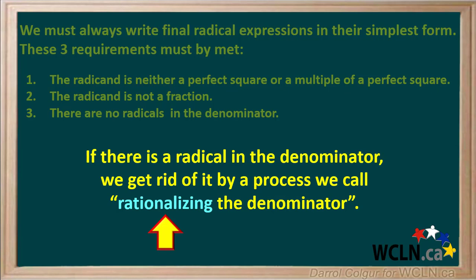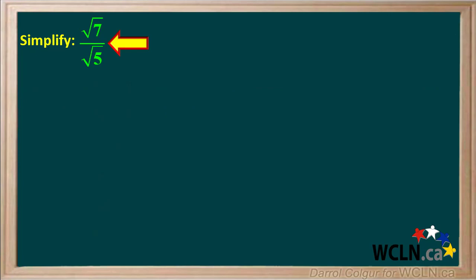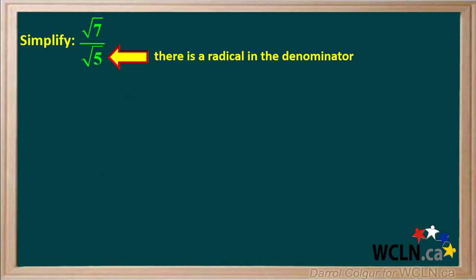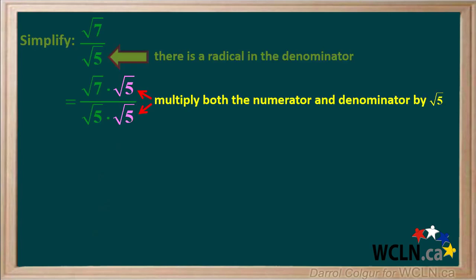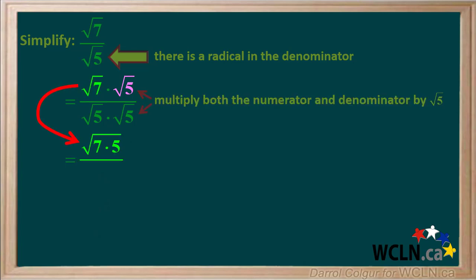We'll do an example to show how rationalizing works. We're asked to simplify the square root of 7 over the square root of 5. Because there is a radical in the denominator, we must rationalize it. We start by multiplying both the numerator and denominator by the square root of 5. Since the square root of 5 over the square root of 5 equals 1, this does not change the value of the expression. The square root of 7 times the square root of 5 equals the square root of 7 times 5, and the square root of 5 times the square root of 5 equals the square root of 5 squared.